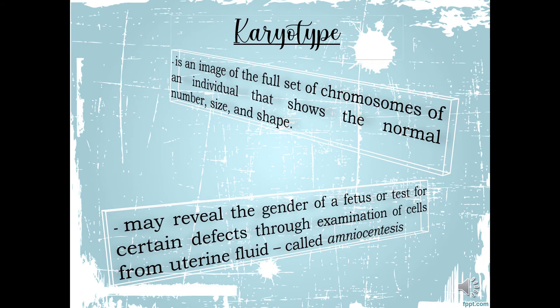called amniocentesis. When we say fetus, it is an unborn offspring of a mammal — in particular, an unborn human baby more than 8 weeks after conception. Through amniocentesis, the gender of the fetus can be determined, as well as whether it is normal or has chromosomal defects. And that is the meaning of karyotype.